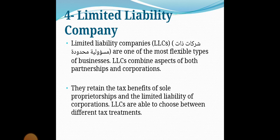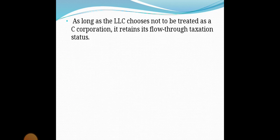As long as the LLC chooses not to be treated as a C corporation, it retains its flow-through taxation status — يعني طالما اختارت الشركة ذات المسؤولية المحدودة عدم معاملتها كـ C corporation، فإنها تحتفظ بحالة ضرائب التدفق — which means it pays tax only once, not twice.